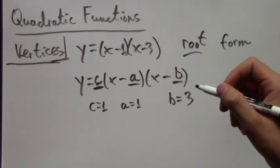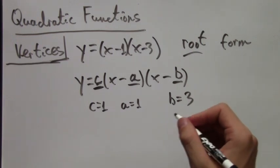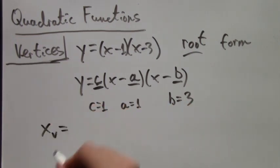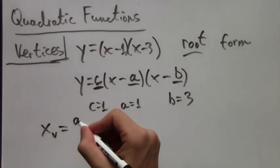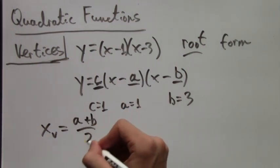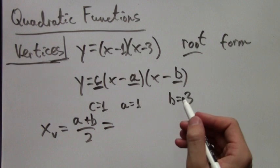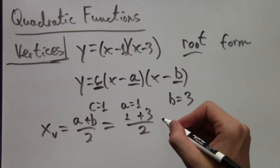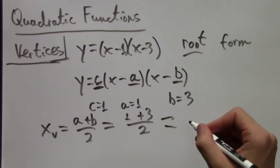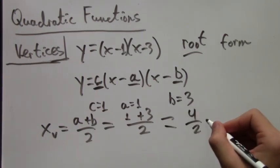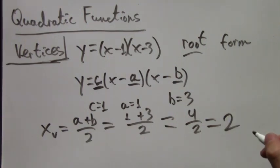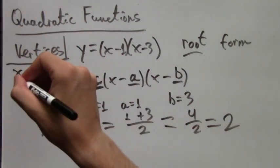So, we need another formula to find the vertex of this parabola. And now the formula is a plus b over 2, which in our case is just 1 plus 3 over 2. And this is, again, this is the x-coordinate of the vertex. 1 plus 3 over 2 is 4 over 2 is just 2. So, we know that the x-coordinate of the vertex is 2.